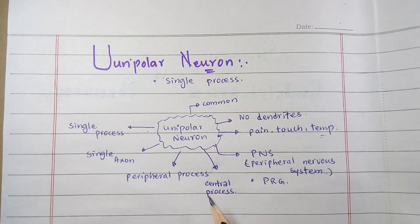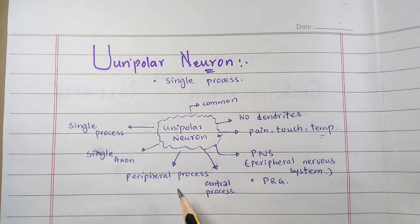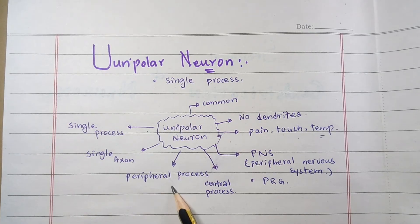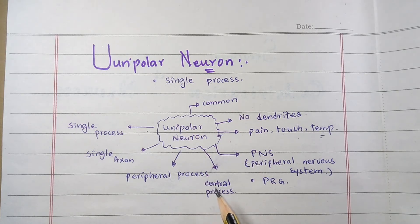The single process that projects out from the cell body branches into two processes: the peripheral process and the central process, which go in opposite directions. The process that extends peripherally away from the cell body toward the receptor organ is called the peripheral process, and the process that extends toward the CNS is called the central process.